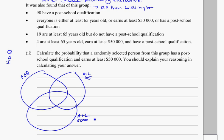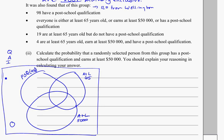Okay, so it was found in this group that 98 of them have a post-school qualification, so that tells me that in that circle for post-school qualification, there's going to be 98 people. So everyone in this group is either 65 years old, at least 65 years old, so in this circle, or earns at least 50,000 in that circle, or has a post-school qualification. So that means to me that there's going to be zero people outside of this Venn diagram, or outside of the circles in the Venn diagram, because everyone falls into one of those three categories.